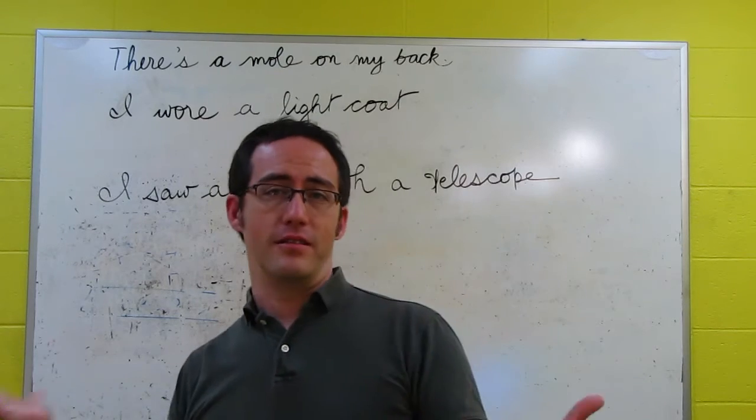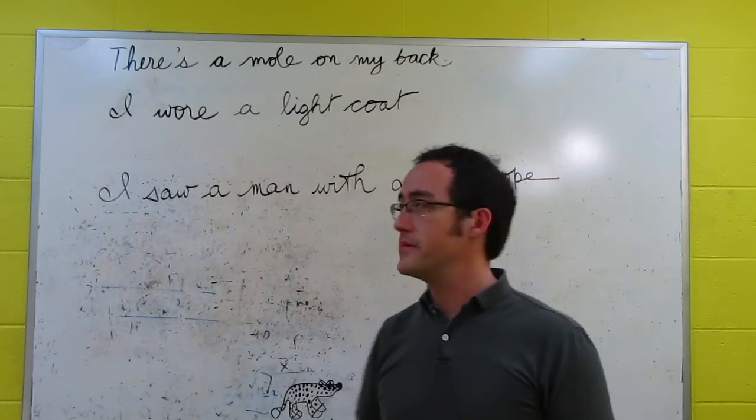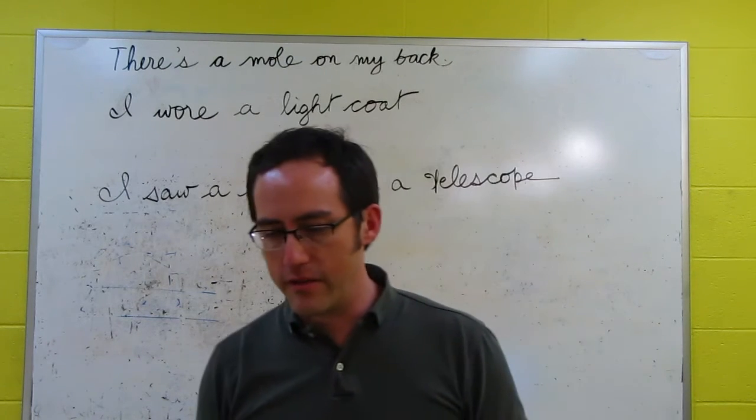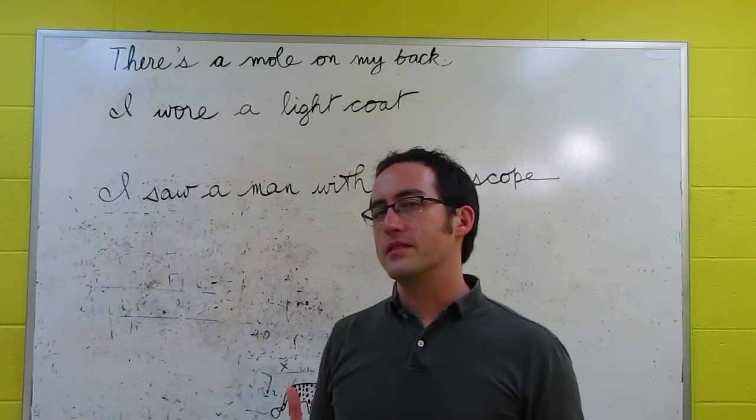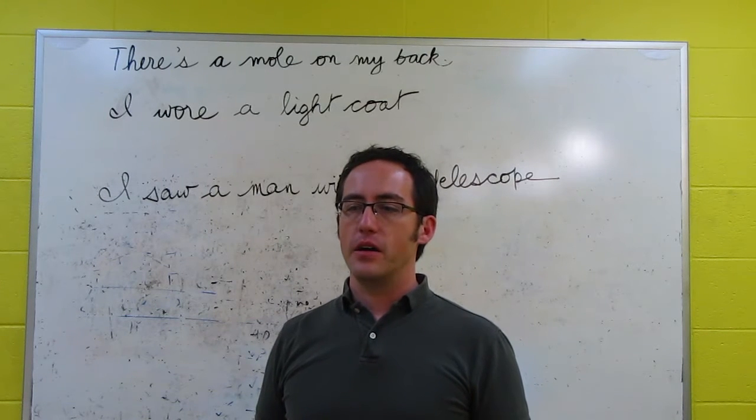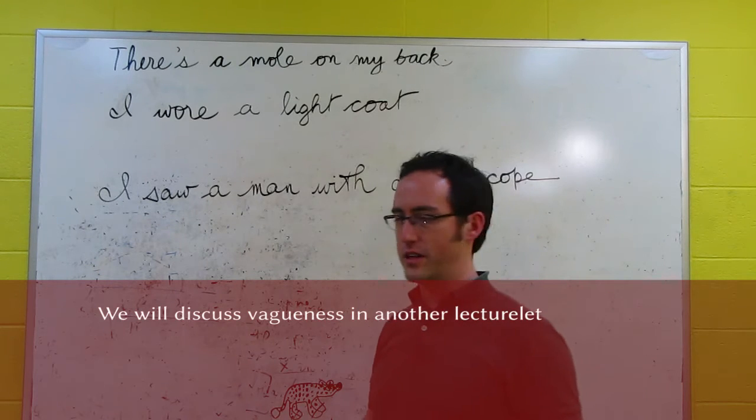If I go to the doctor, however, and I say there's a mole on my back, could you look at it? It's probably going to be the spot. Now, another element of ambiguity involves lexical ambiguity, but there might also be a sense where it's not quite lexical. And it skirts the line between ambiguity and vagueness, and we'll get to that.